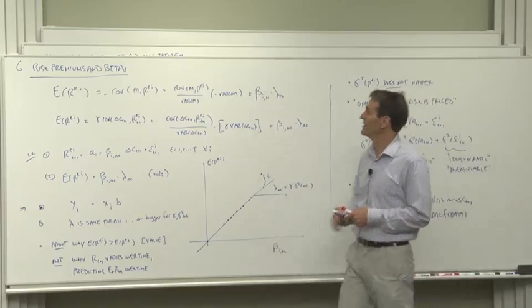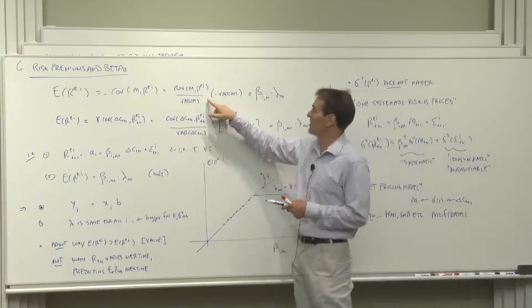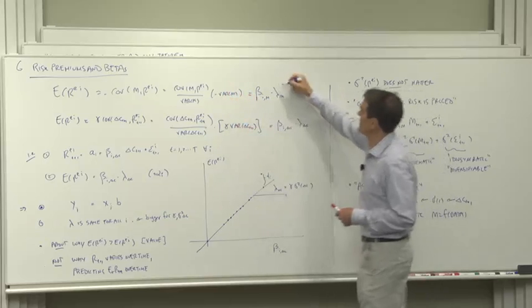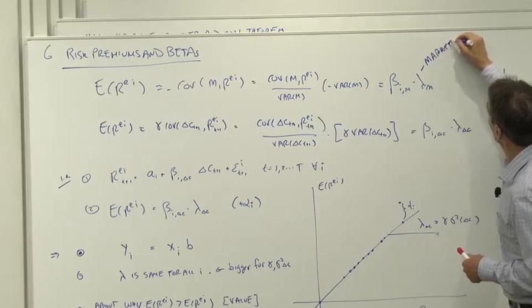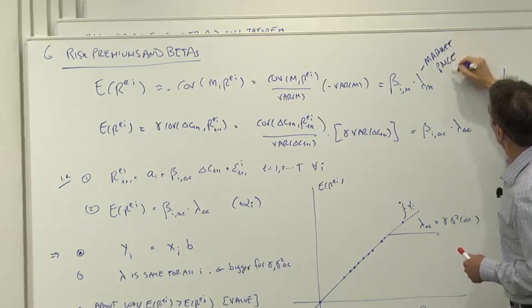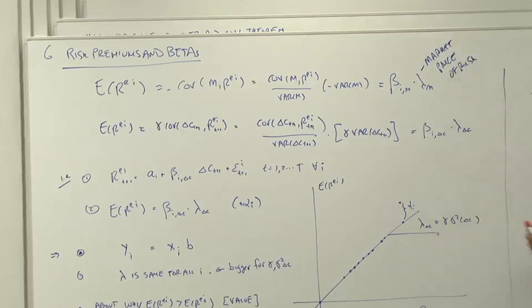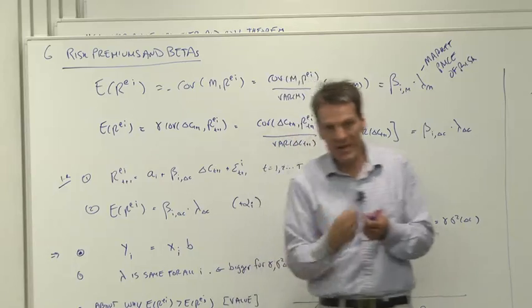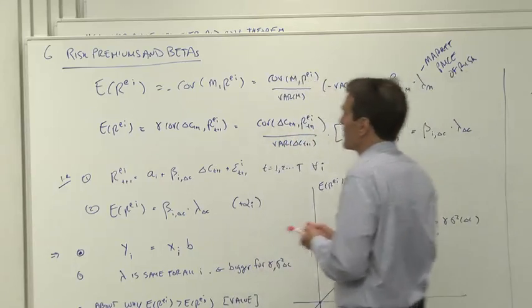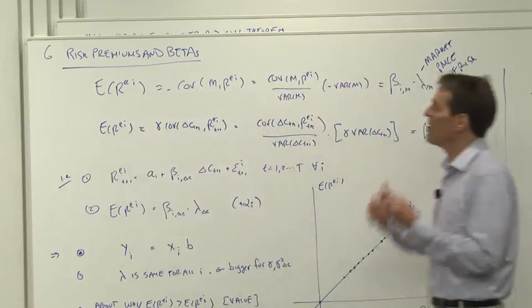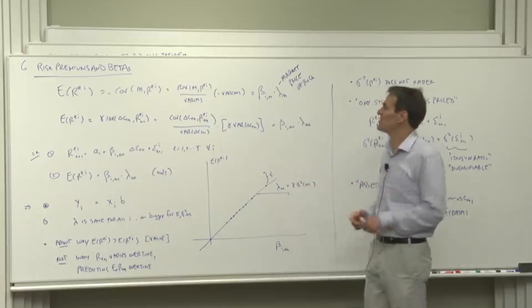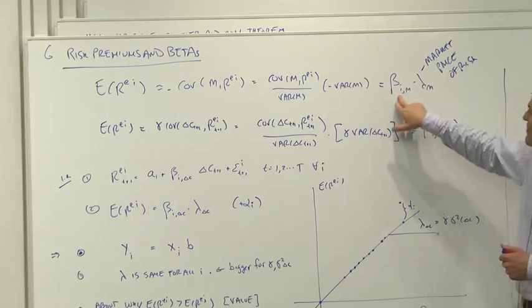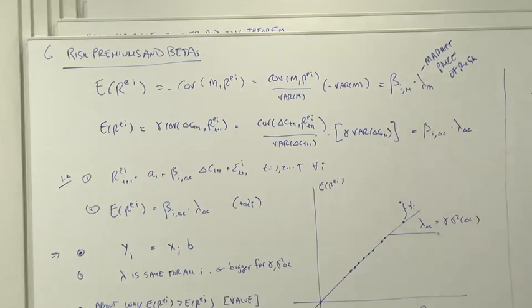So we write the same model as expected return is proportional to beta times a parameter known as the market price of risk. These are called market prices of risk. I've added an i here to emphasize the point is to distinguish why some assets are different from others. So i is different from j. Why is asset i different from asset j? Why do value stocks pay more than growth stocks according to this model? Because asset i has a different beta than asset j. They all share the common lambda.